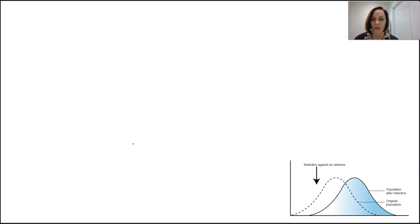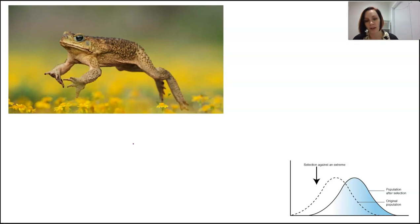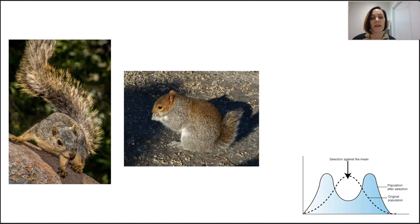For directional selection, cane toads in the Northern Territory and Western Australia have evolved the ability to hop in a very straight line quickly, covering up to six times more ground than those found in Queensland. Faster-dispersing toads have survived better and produced more offspring. Some lizards and amphibians have also evolved longer tails to resemble snakes, warding off predators. Squirrels in North America show disruptive selection in tail length — those on the ground benefit from shorter tails to hide from predators, while those in trees need longer tails for balance, making a middle-sized tail uncommon.